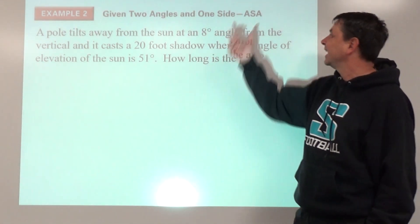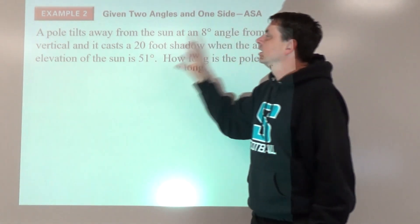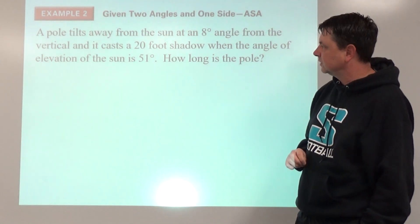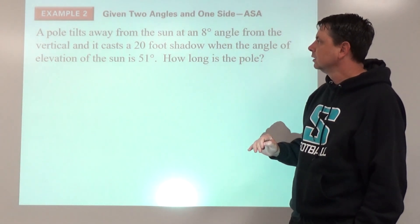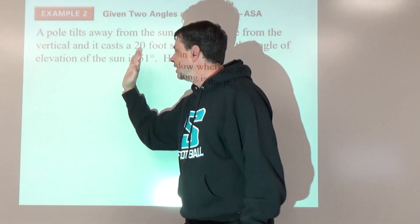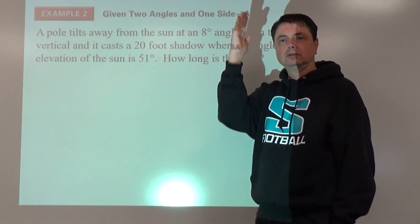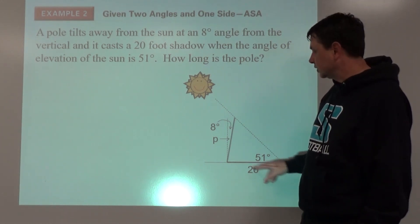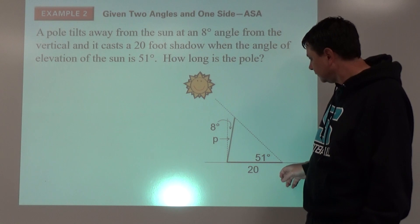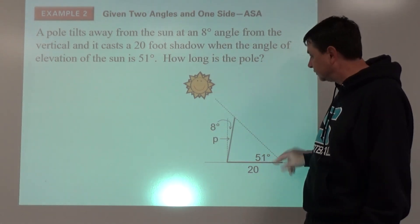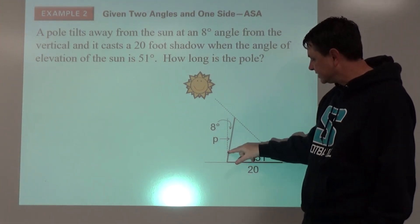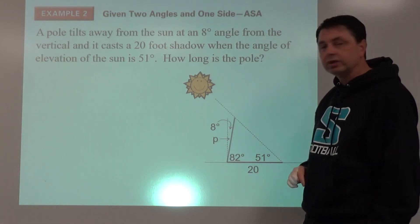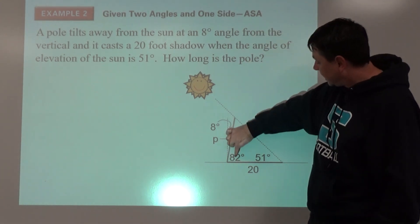Example number two — angle-side-angle; we'll need to create a sketch. A pole tilts away from the sun at an eight-degree angle from vertical and casts a 20-foot shadow; the angle of elevation of the sun is 51 degrees. How long is the pole? The sun is over here; the pole tilts away from it. The shadow runs 20 feet away from the sun. The angle of elevation from horizontal up to the sun is 51°. Since vertical is 90° and the pole is 8° short of that, the angle between pole and ground is 82°. Our situation is angle-side-angle.